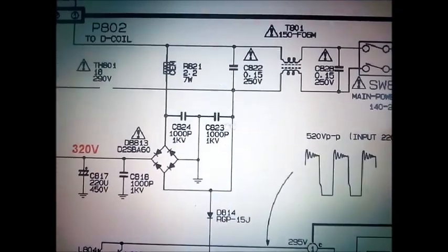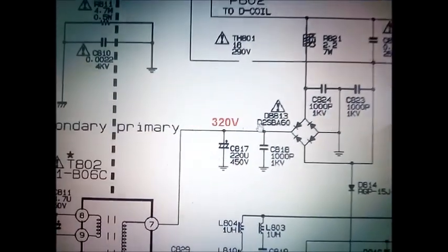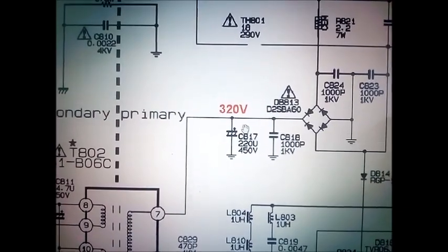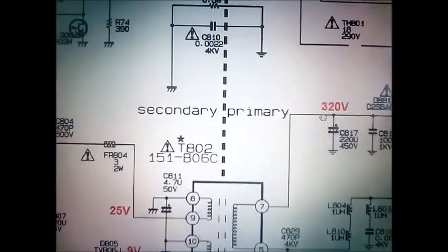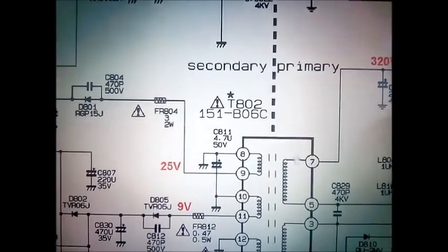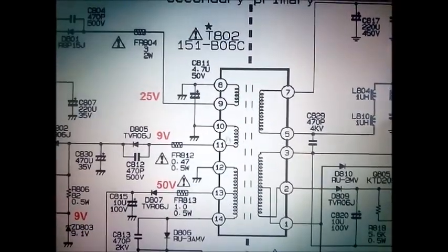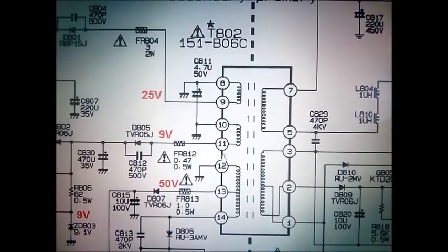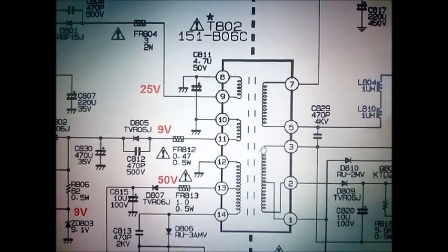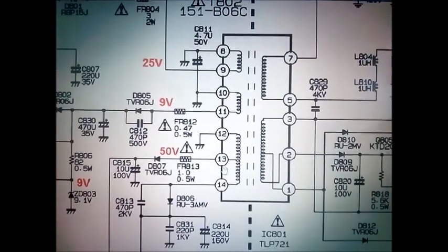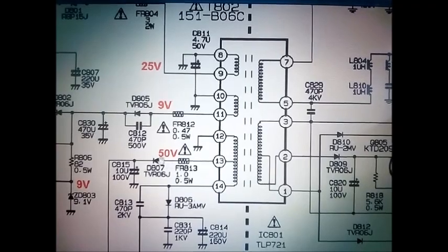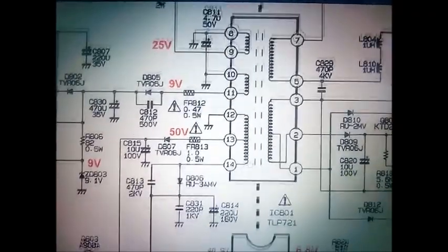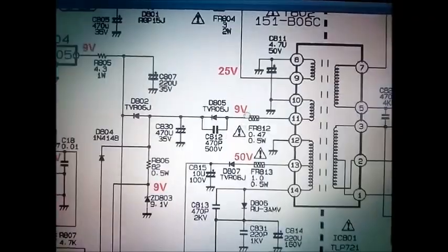Then we check the filter voltage. Main filter is 320 volts. Then we check the main transformer pin number 9 is 25 volts and pin number 11 is 9 volts.